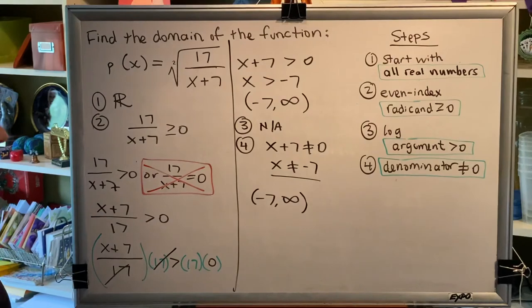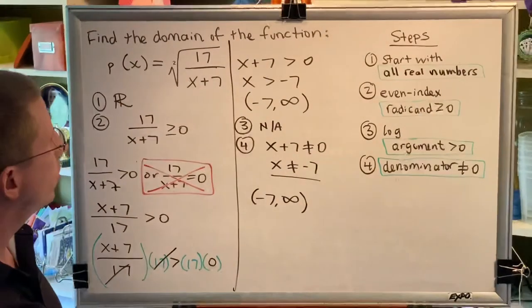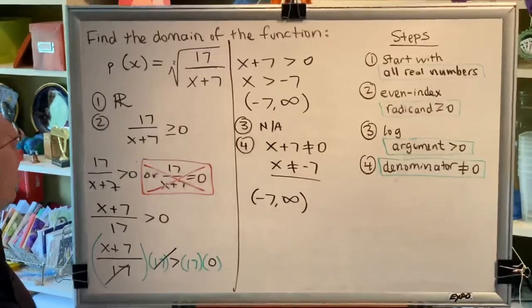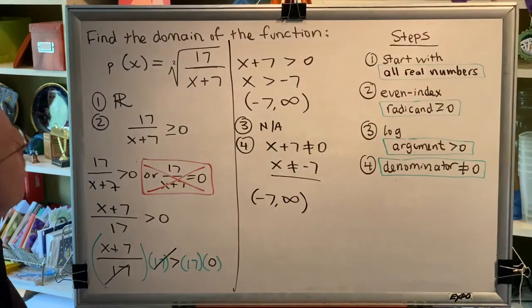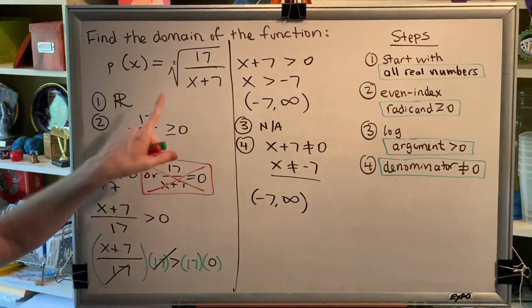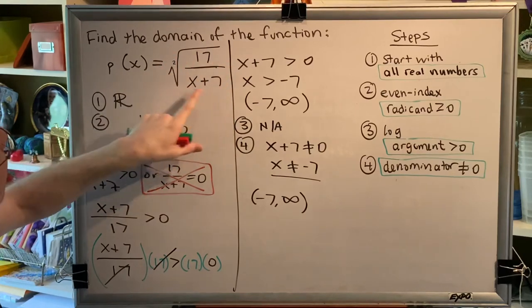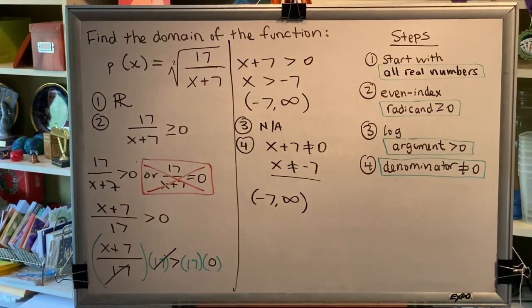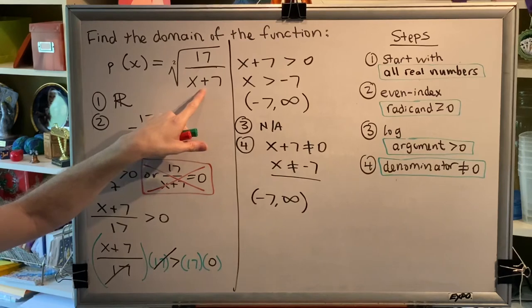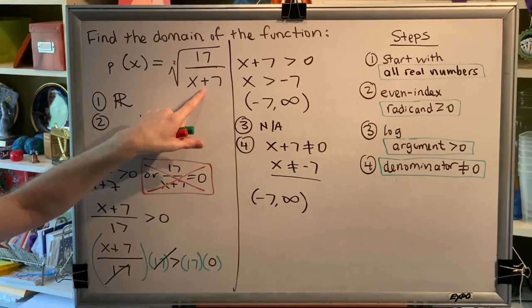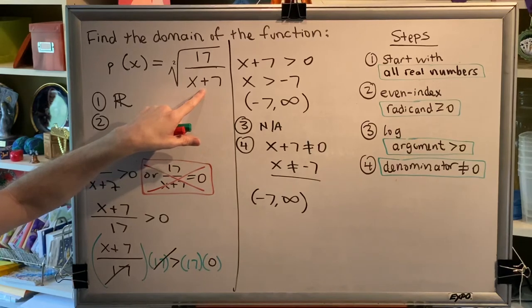So, this is kind of a tricky problem. Let me give you sort of a shortcut, a faster way of getting to the answer. Whenever you see a problem of this type, where you have an entire fraction underneath a square root, what that's telling you is, the denominator of that fraction is not allowed to be zero, because that would make division by zero happen, which is not possible.